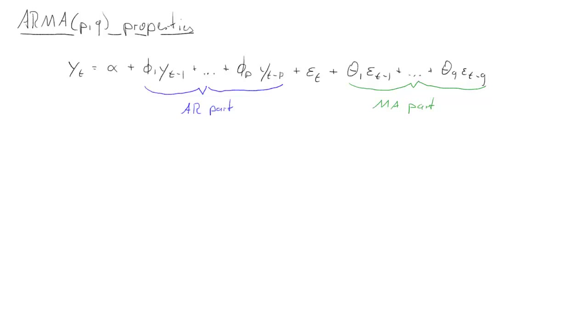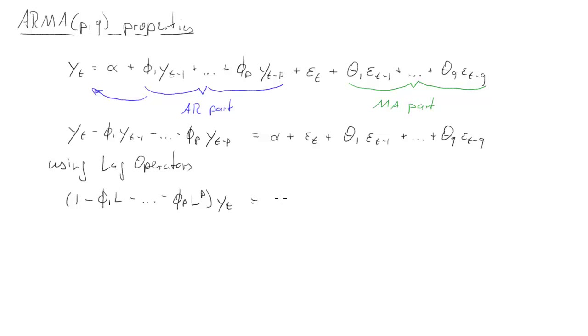It's useful here to bring the lag y_t parts to the left-hand side of the equation, and what we then get is all the lags on the left-hand side, and on the right-hand side we have the constant and all the epsilons. Let's use lag operators, that will be very useful, and we'll get (1 minus phi_1 L all the way up to phi_p L to the p) times y_t, that's the same as the left-hand side, all the y_t bits.